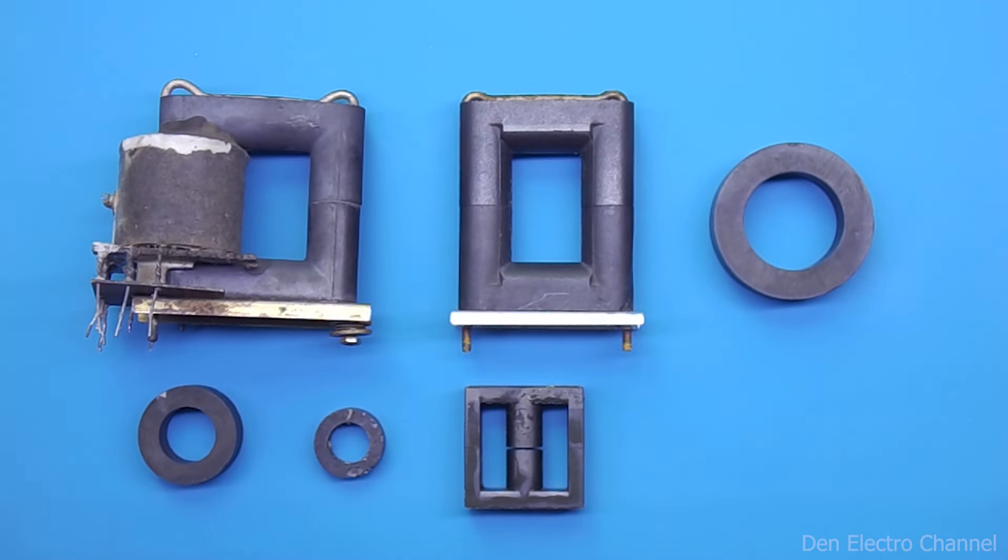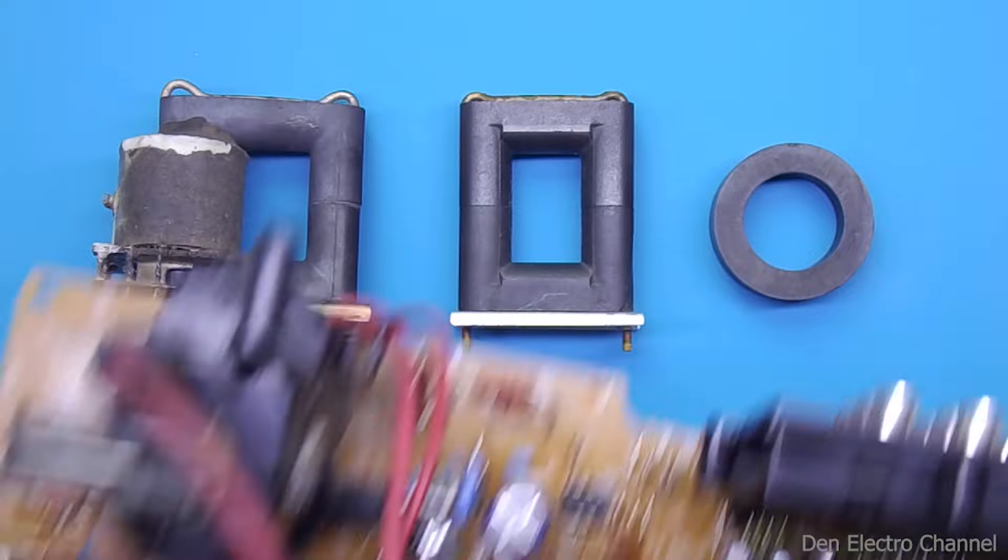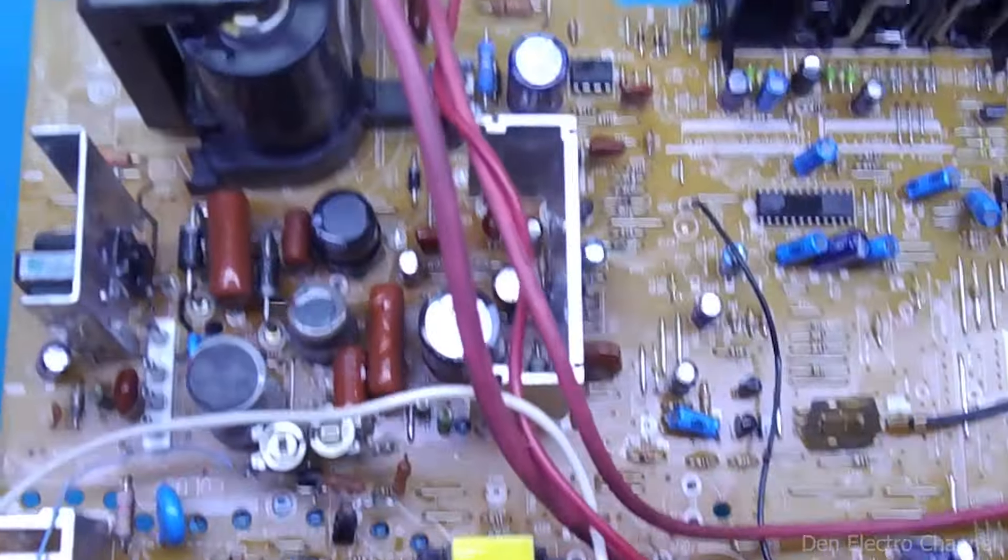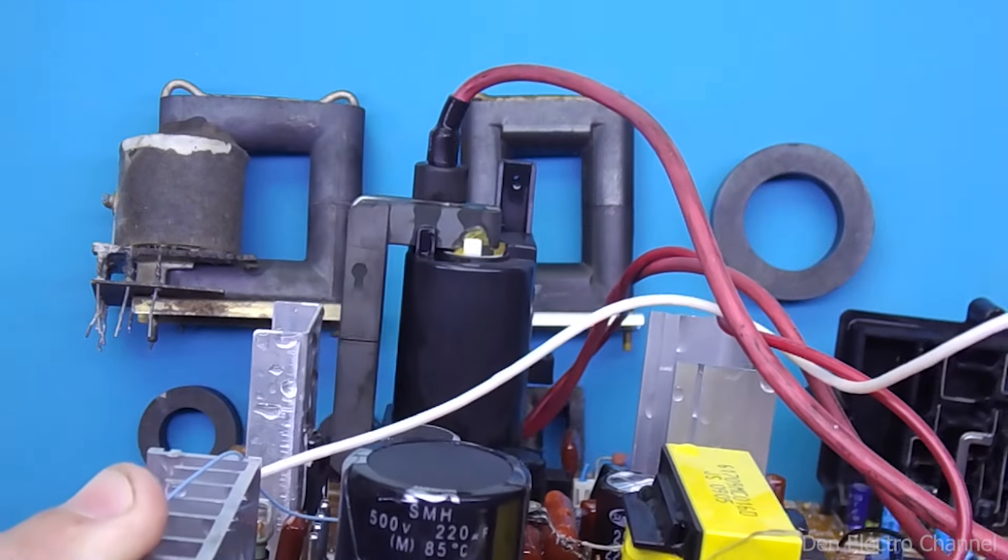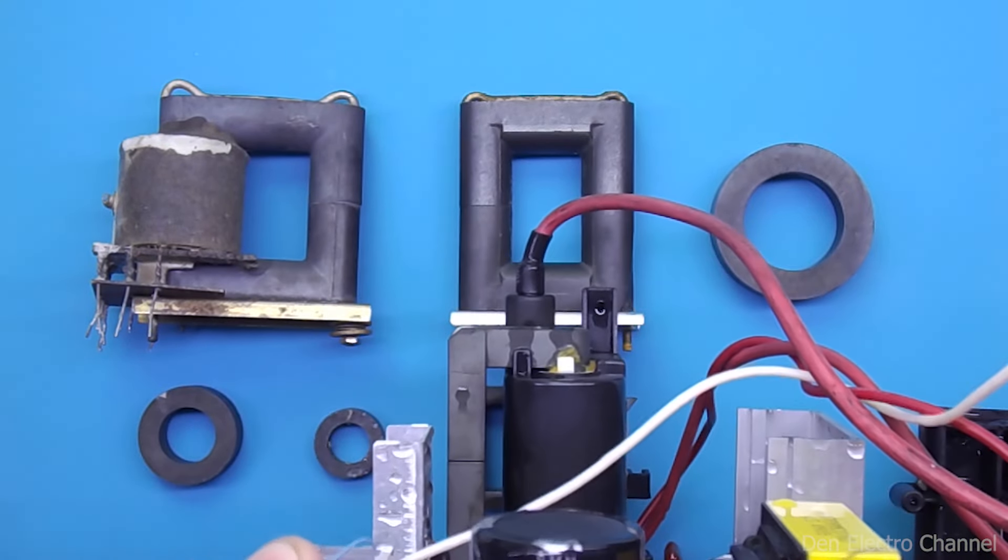And of course, the cores can be used not only from Soviet TV's transformers, but also from foreign TDKS. The magnetic circuits here are slightly smaller than their Soviet counterparts, but it will also work.